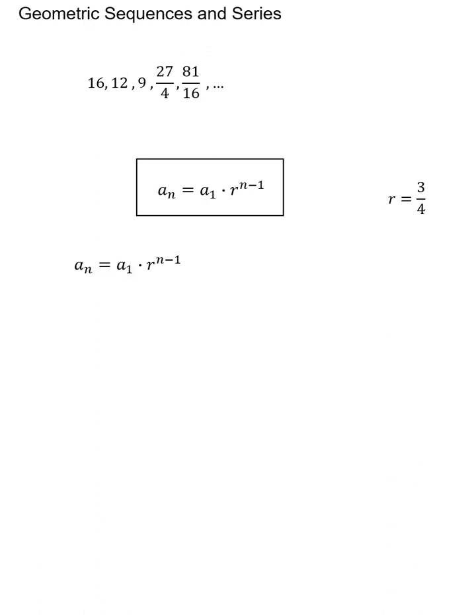So here's the formula for a geometric sequence. We could plug in for n any term that we wanted to know. For r and a1, we know those values are 16 and 3/4. We can plug those in. And now I have what's called the general term or the nth term of this geometric sequence.